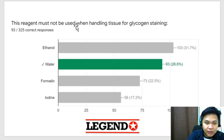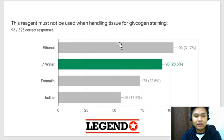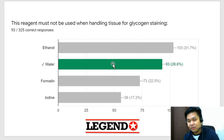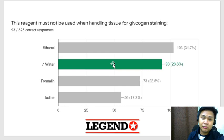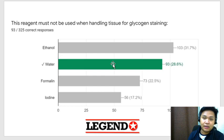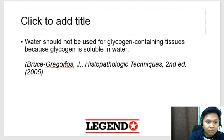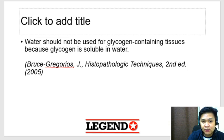This reagent must not be used when handling tissue for glycogen staining — the answer is simply water. Remember, glycogen is a polysaccharide which is water-soluble. Ang glycogen natutunaw siya sa tubig; that's why you do not need an enzyme for digesting glycogen, unlike starch which needs amylase. So in tissue processing, if you are looking for glycogen, you have to avoid any reagent with water since this will cause the dissolution of your glycogen. A good example is liver — ang liver may glycogen dyan, so if you're trying to look for glycogen in the liver, do not use any reagent with water.